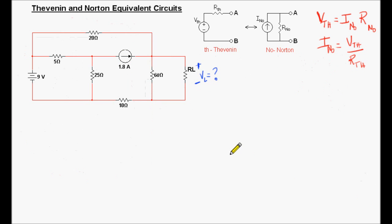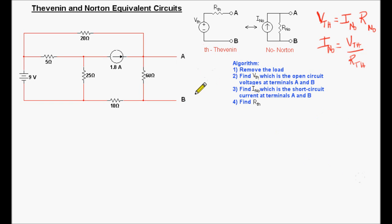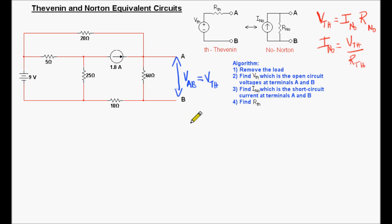Let's find the equivalent circuit for this example circuit, replacing it with a Thevenin or Norton equivalent. We follow a step-by-step algorithm. The first step is to remove the load. After removing it, we have only connection points A and B. The second step is to find V_Thevenin — the open-circuit voltage at terminals A and B. Since we're looking for voltage, we'll use node analysis.